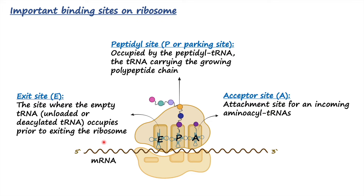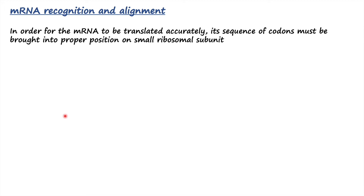Another important topic is how mRNA and the ribosome are aligned together, because that is crucial for accurate mRNA translation. If they are not aligned properly, the translation process cannot be initiated. In order for the mRNA to be translated accurately, its sequence of codons must be brought into the proper position on the small ribosomal subunit.